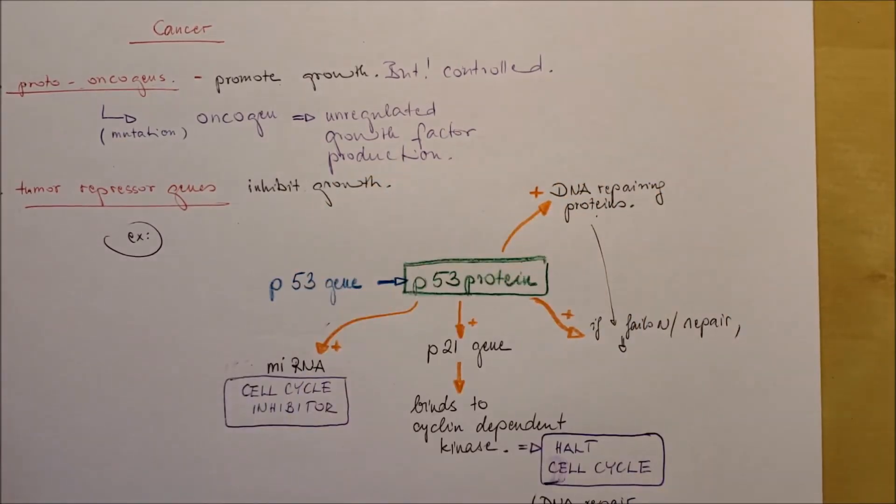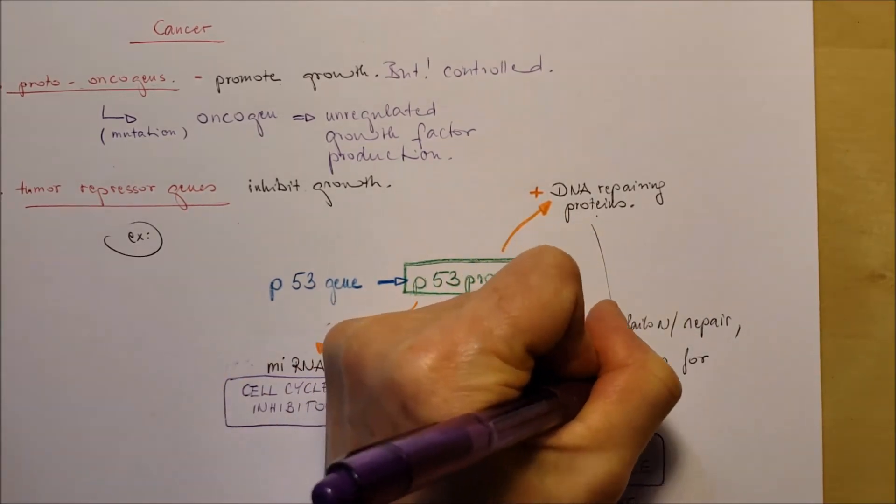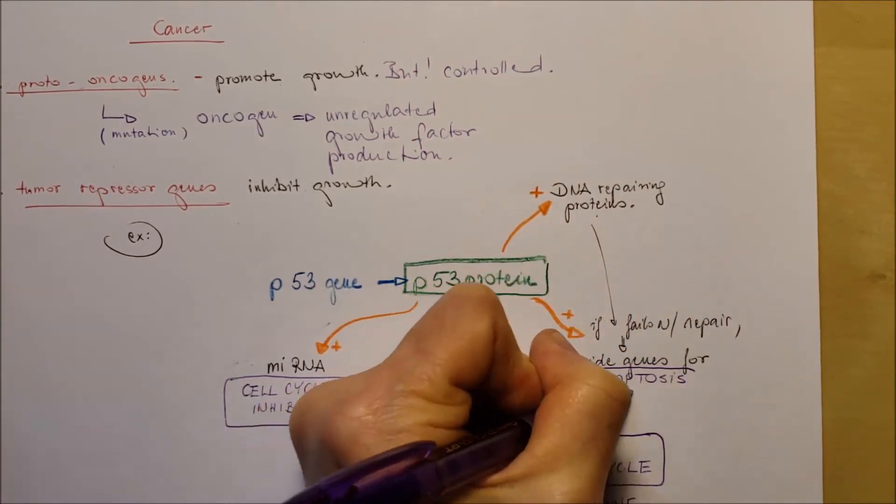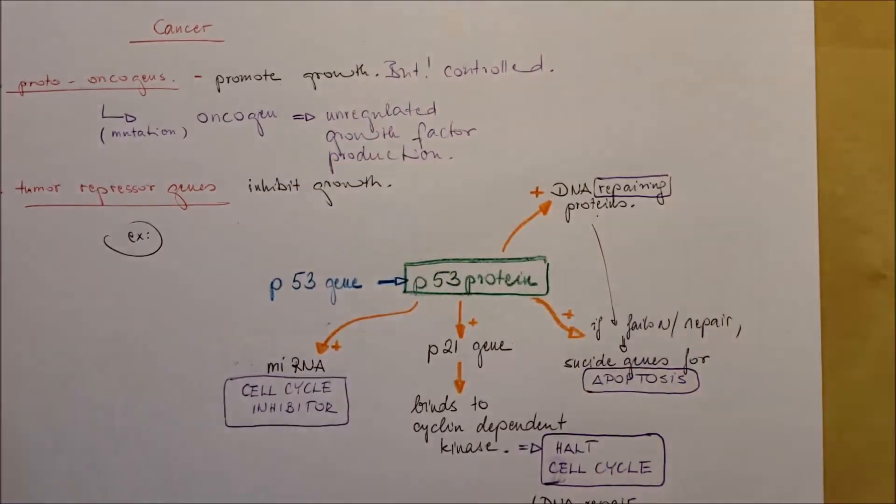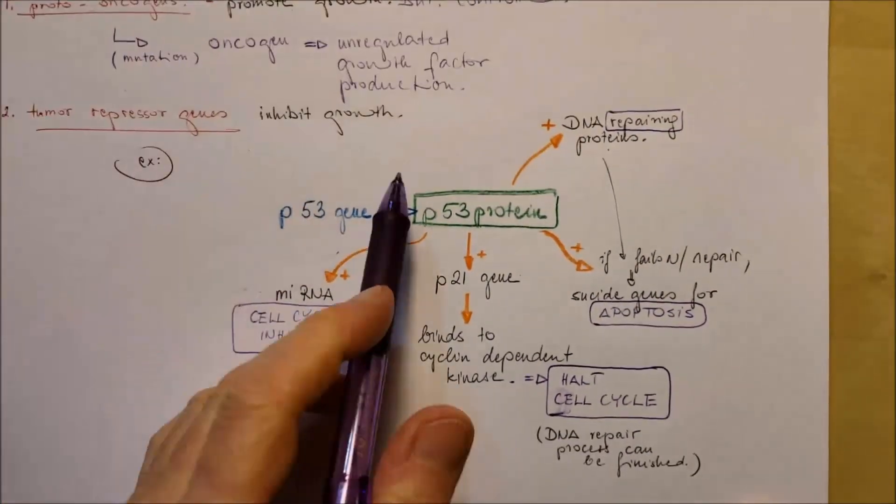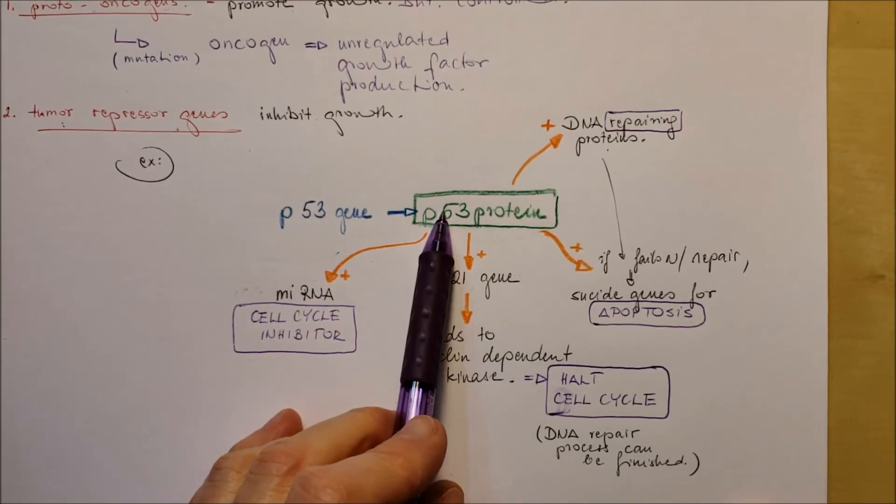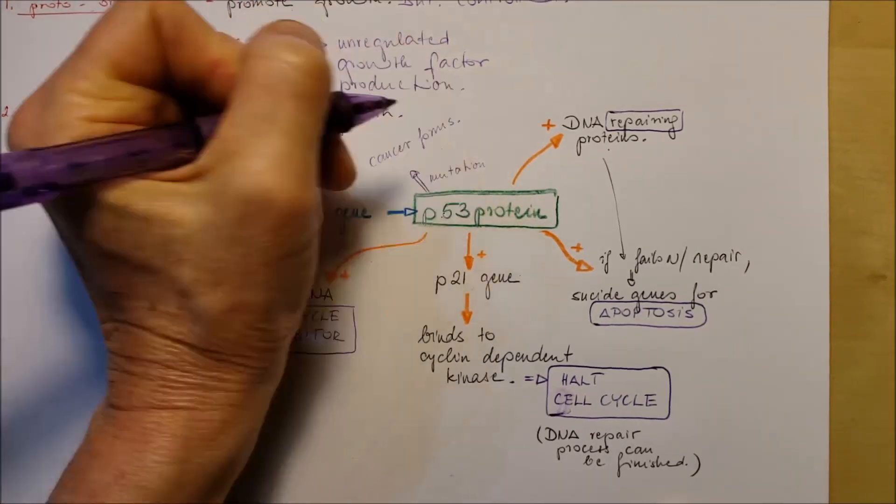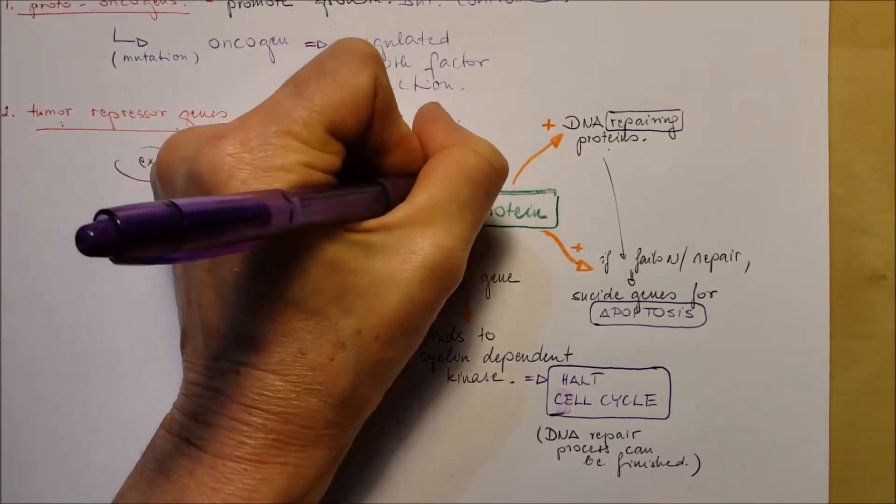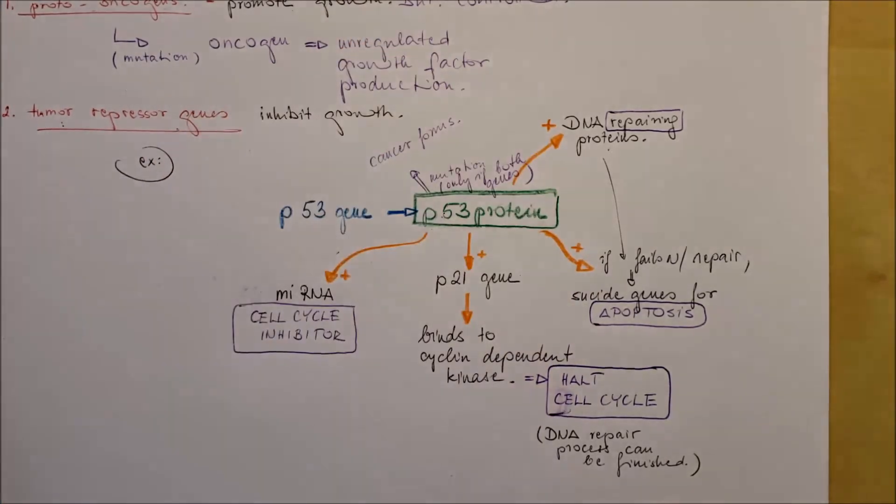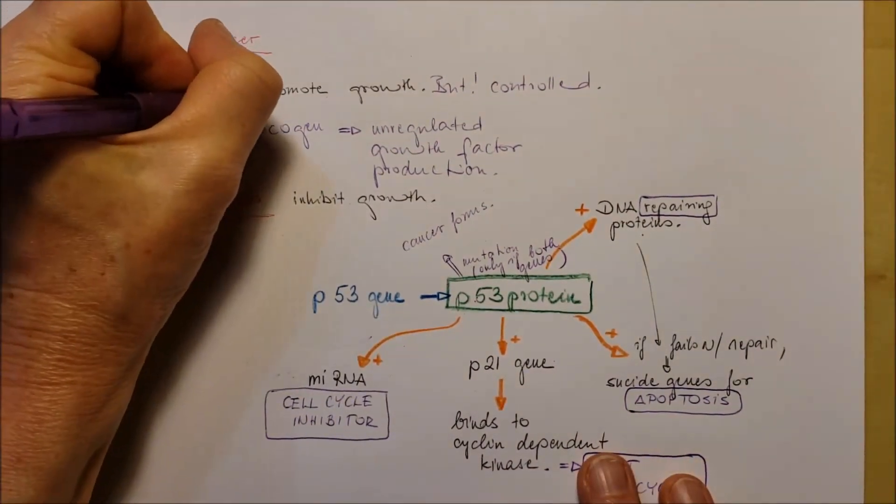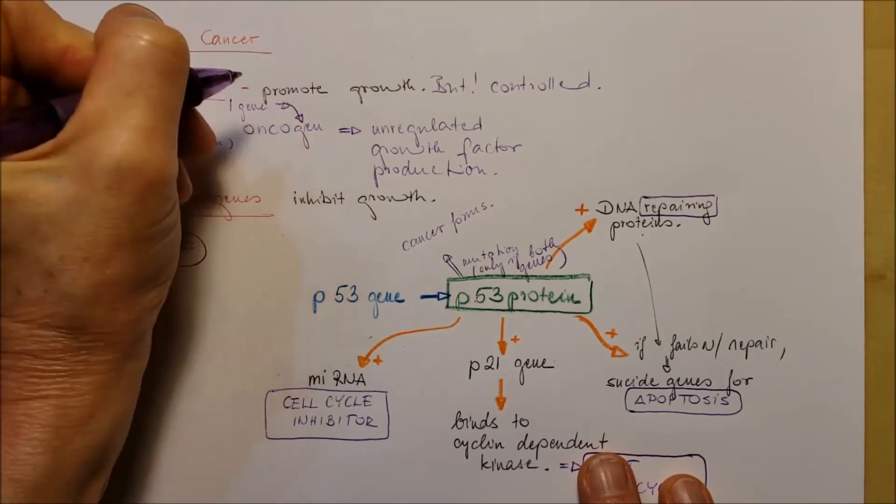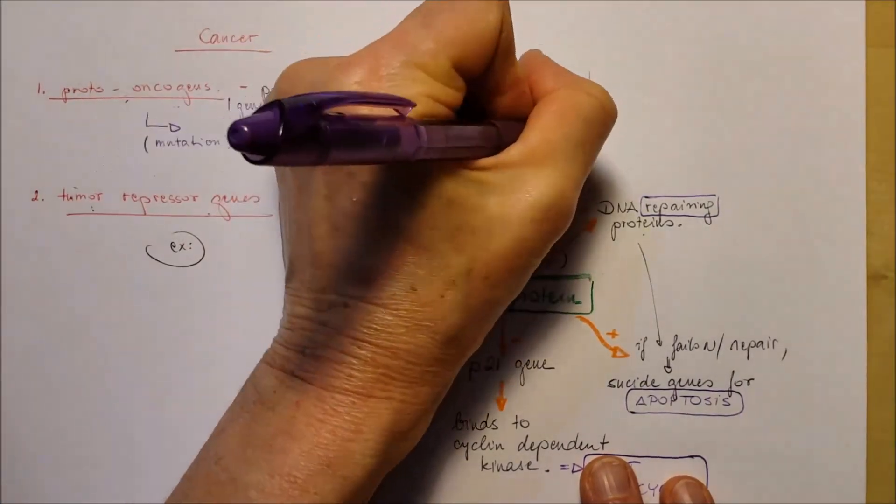They will make the mistakes. And if the DNA repairing is not going to happen, if it fails, it will activate the suicide genes for apoptosis for the cell. If mutation happens to both of the genes, it's going to form cancer. Because the cell cycle will speed up or it will not be slowed down. That's all.